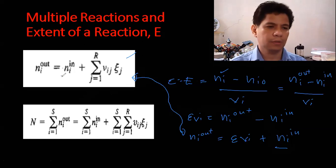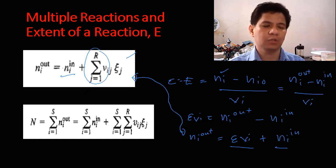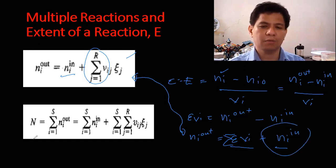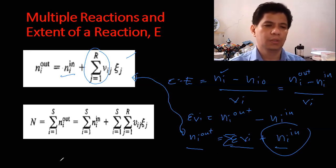So N_i_in stays constant regardless of multiple reactions. The summation of ν_ij times ε_j accounts for the contribution of each reaction. For two or more reactions, that's why we have the summation. The initial number of moles N_i_in is whatever enters the reactor, and after applying the summation we find the number of moles of each chemical species remaining after all reactions.